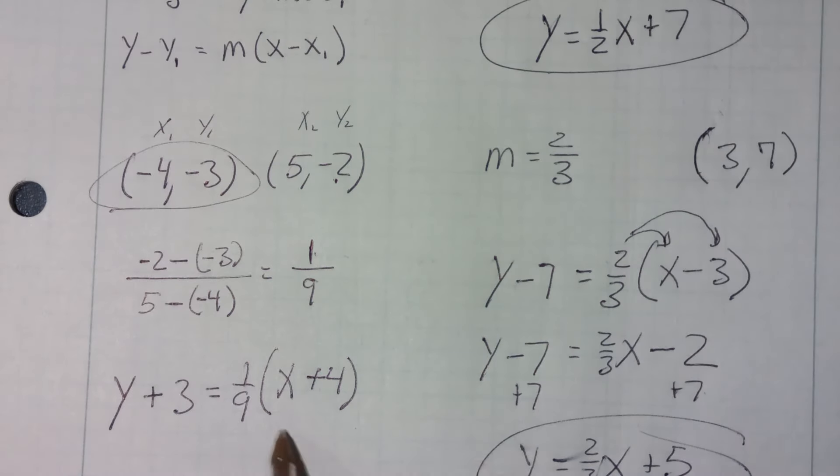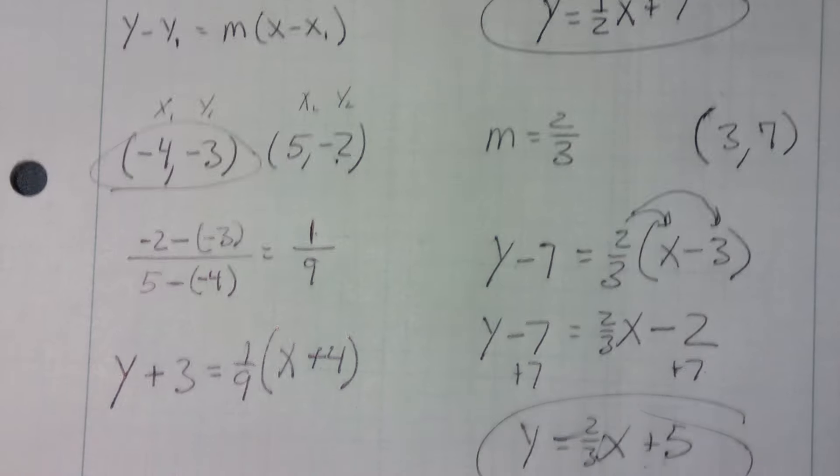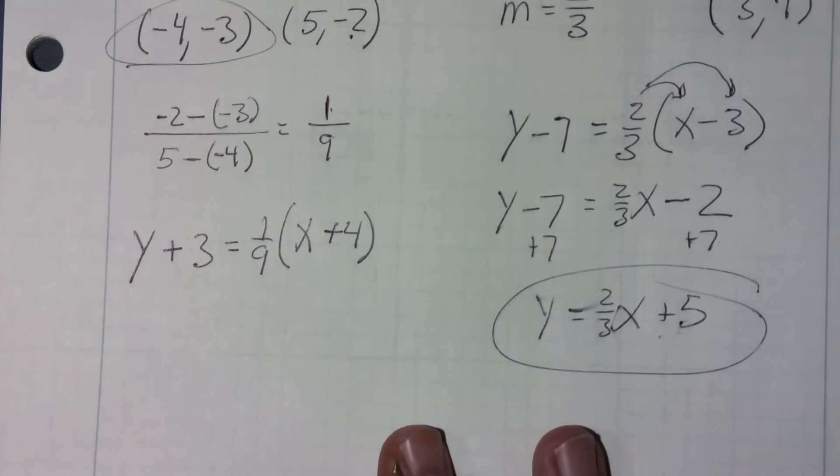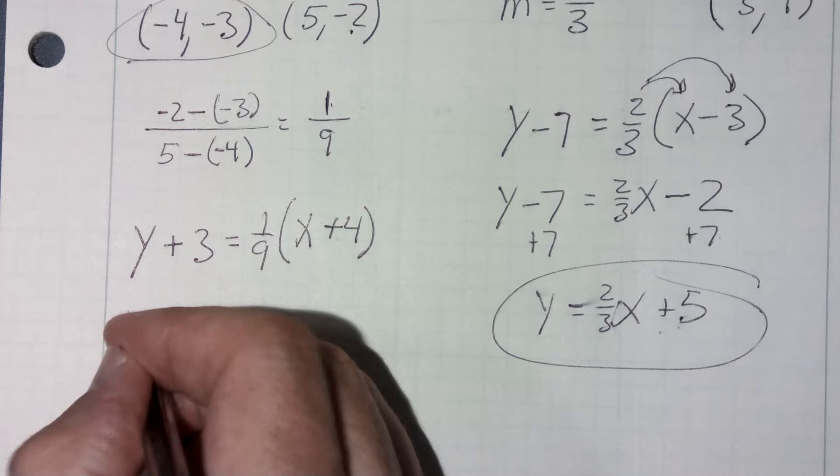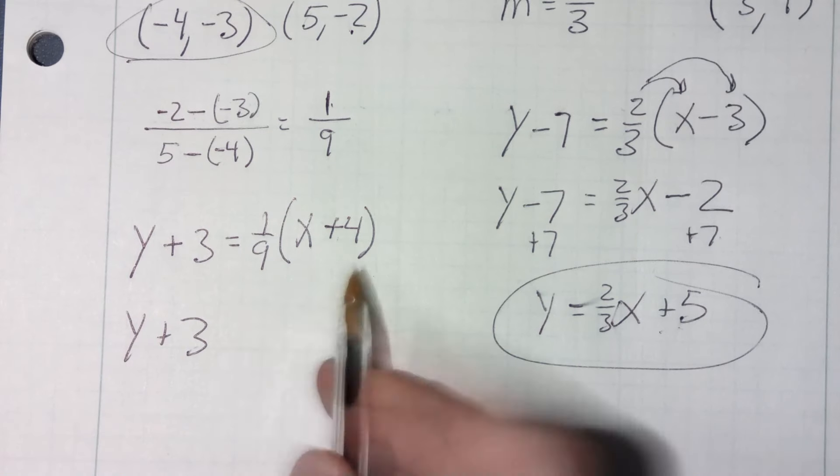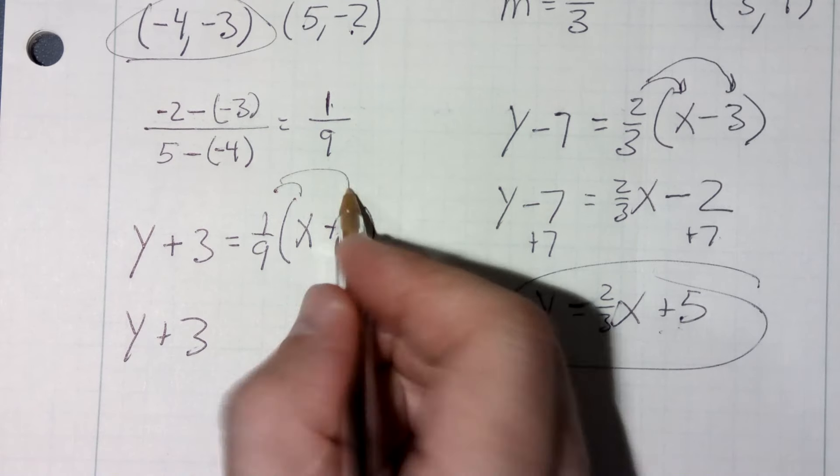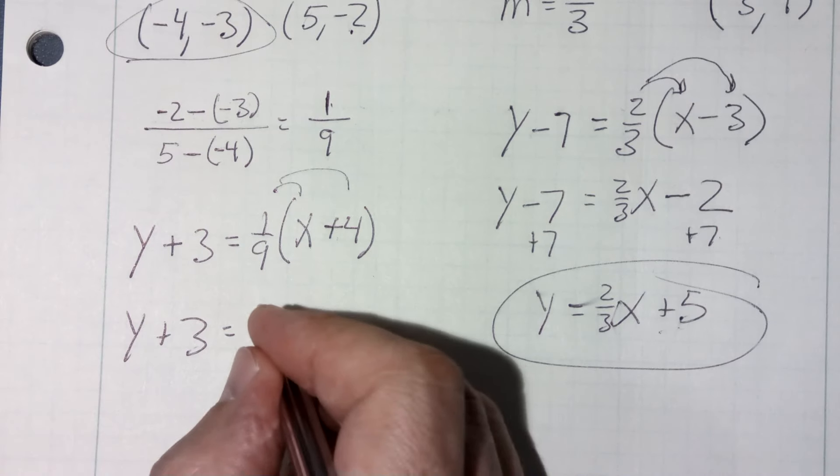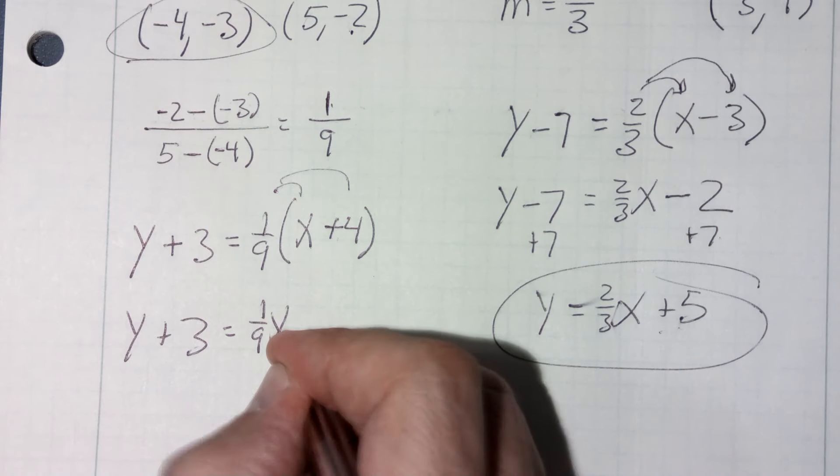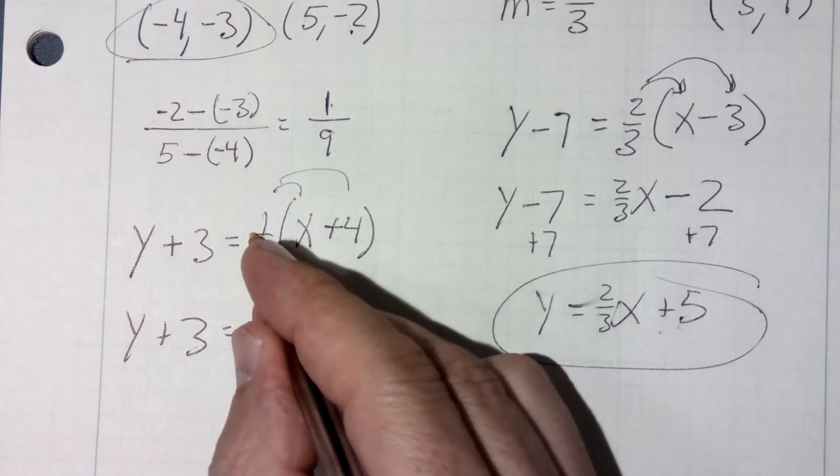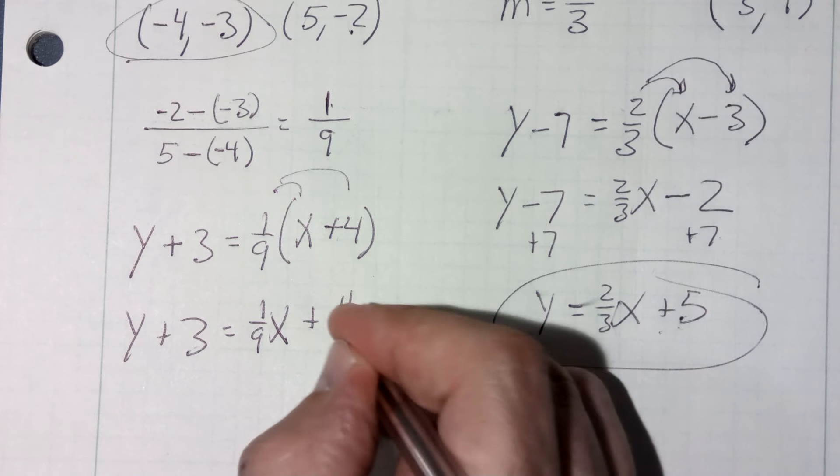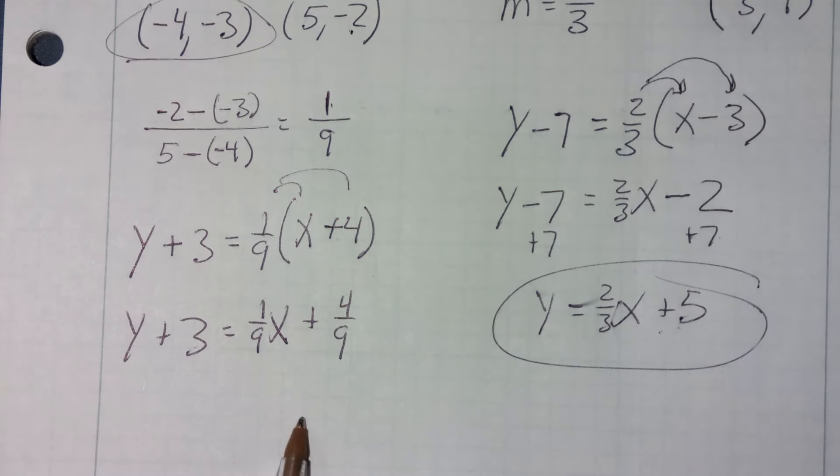Now I'm going to take this and I'm going to simplify it to slope-intercept form. So the first thing I'm going to do is I'm going to remove the parentheses by distributing in. So I'm going to go y plus one third equals one ninth x plus one ninth times four is four ninths, which is perfectly fine to have a fractional y-intercept.